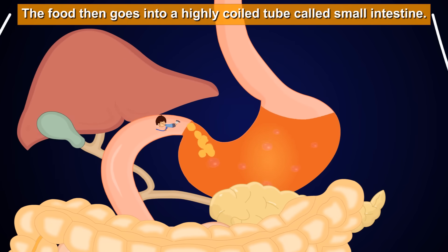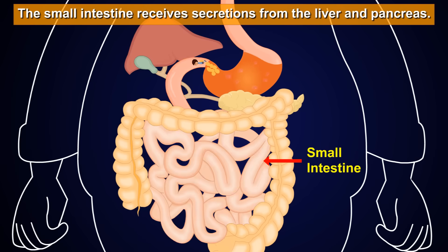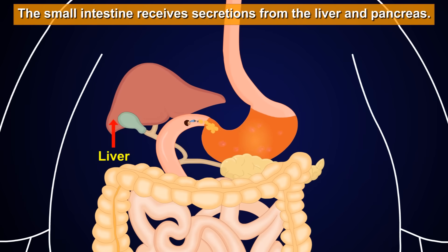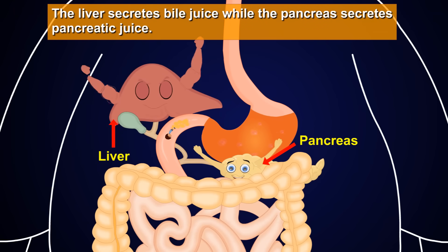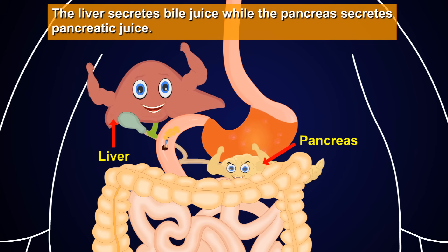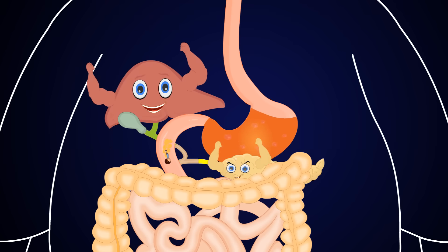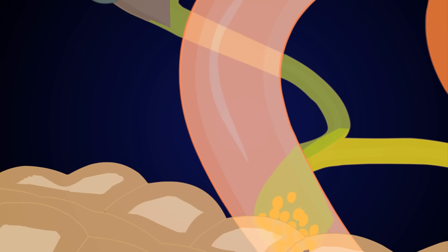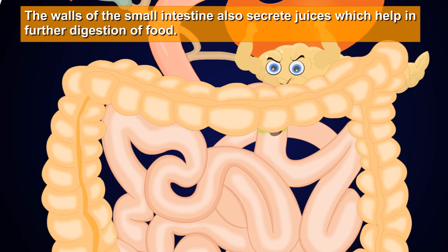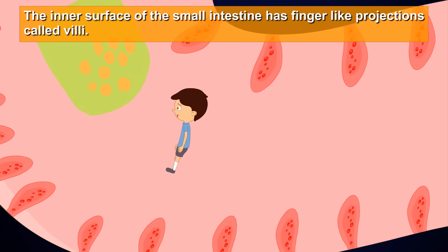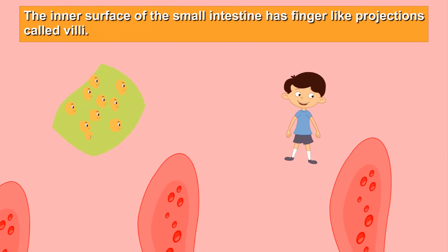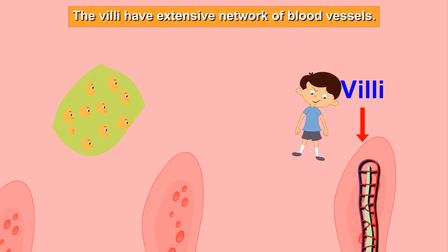The food then goes into a highly coiled tube called the small intestine. The small intestine receives secretions from the liver and pancreas. The liver secretes bile juice, while the pancreas secretes pancreatic juice. The walls of the small intestine also secrete juices which help in further digestion of food.